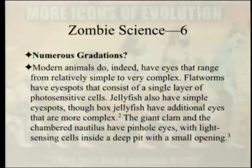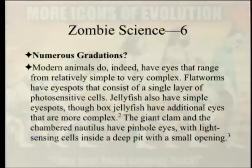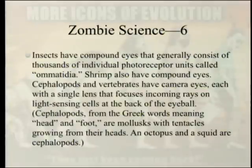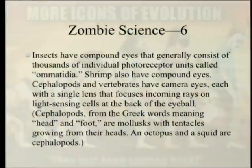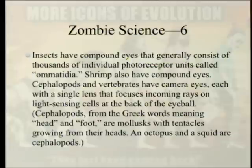Modern animals do indeed have eyes ranging from simple to complex. Flatworms have eye spots with a single layer of photosensitive cells. Jellyfish have simple eye spots, though box jellyfish have more complex ones. The giant clam and chambered nautilus have pinhole eyes. Insects have compound eyes with thousands of individual photoreceptor units called ommatidia. Shrimp also have compound eyes. Cephalopods and vertebrates both have camera eyes with a single lens focusing light onto sensing cells at the back of the eyeball. Limpets also have a shallow curved eye allowing them to assign directionality to light.